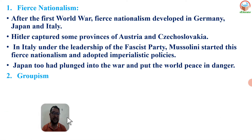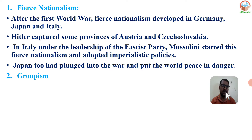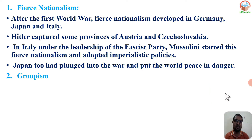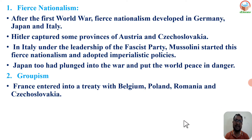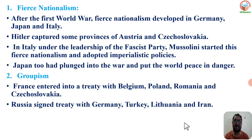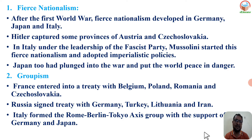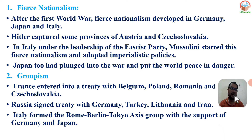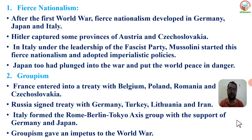Second factor — Groupism. As in the First World War, there were opposing groups in the Second World War too. France entered treaties with Belgium, Poland, Romania, and Czechoslovakia. Russia also signed treaties with Germany, Turkey, Lithuania, and Iran. Italy formed the Rome-Berlin-Tokyo Axis with the support of Germany and Japan. This groupism contributed significantly to the Second World War.